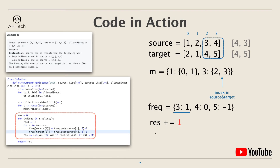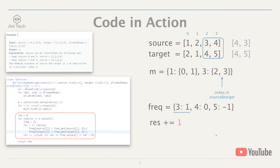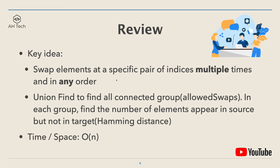This concludes the algorithm. Let's review: the key idea is the important condition that we can swap elements at a specific pair of indices multiple times and in any order. We use a Union-Find data structure to find all connected groups from the allowSwaps array.